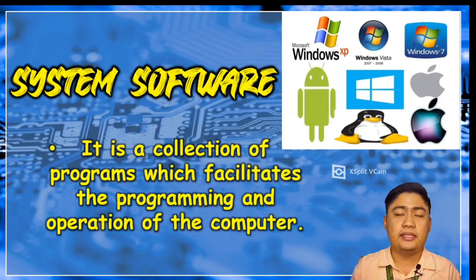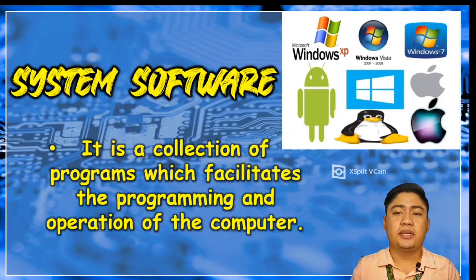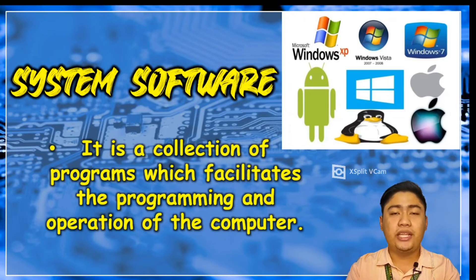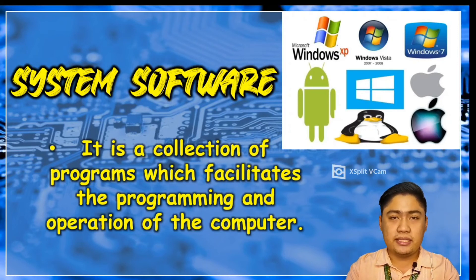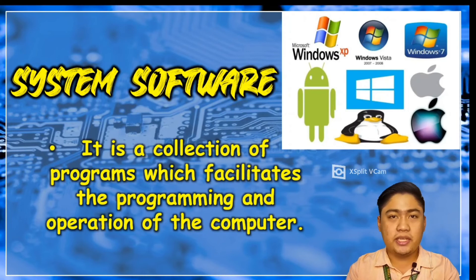An example of system software is the operating system. The operating system manages the computer's internal functions and provides a means to control the computer's operation. It is a master control program permanently stored in memory that interprets user commands. Examples of system software include MS-DOS, Linux, and Microsoft Windows.